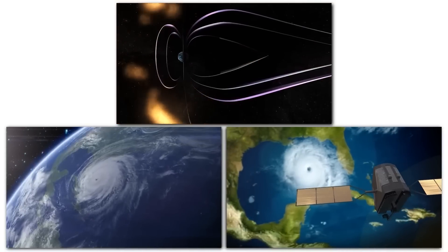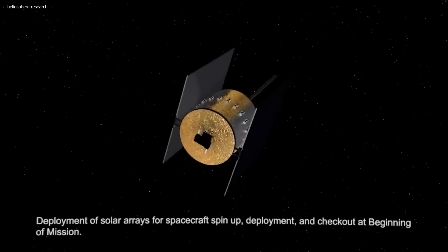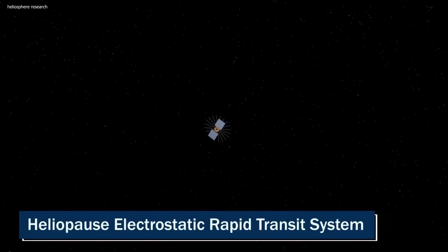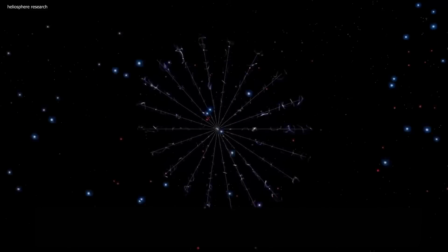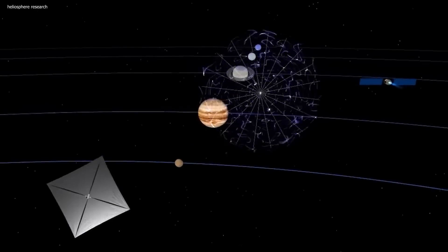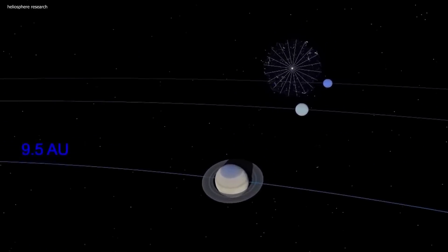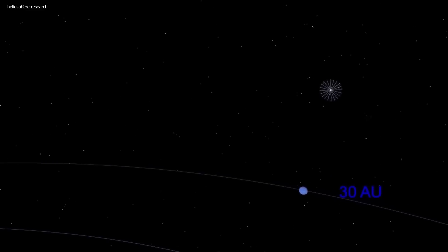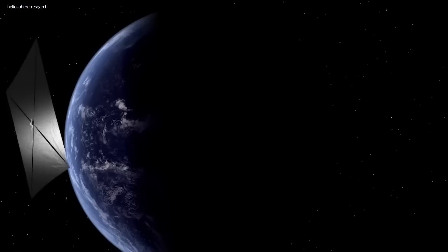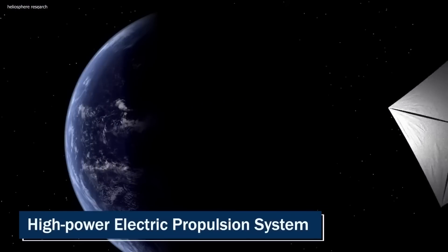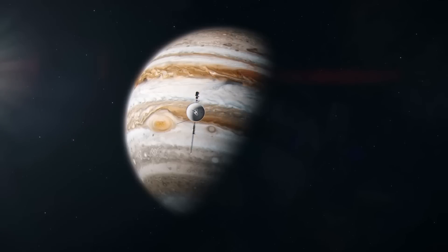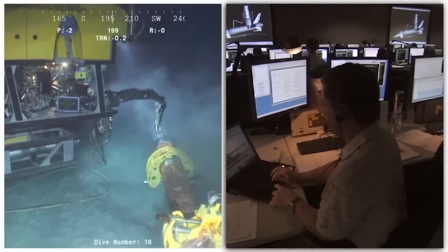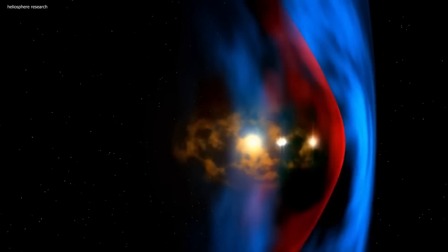The Heliopause Electrostatic Rapid Transit System, Hertz, is a proposed mission by NASA to study the heliopause, the boundary between the solar system and the interstellar medium. The mission would involve sending a probe to the heliopause using electrostatic propulsion, which uses electric fields to accelerate and propel the spacecraft. The Hertz spacecraft would use a lightweight, high-power electric propulsion system to make its way to the heliopause in just a few years instead of the decades it took Voyager probes. The spacecraft would carry a suite of scientific instruments to study the magnetic fields, particles, and other phenomena of the heliopause in great detail.